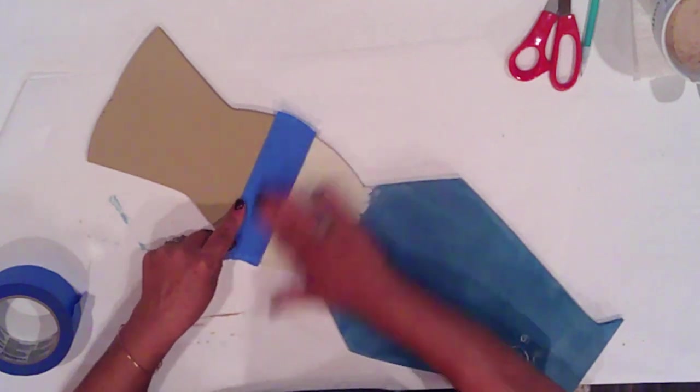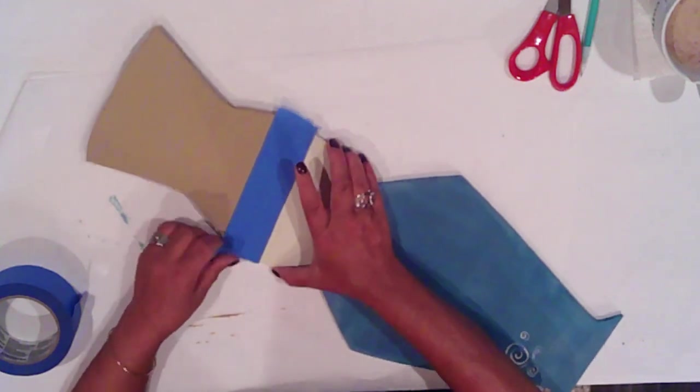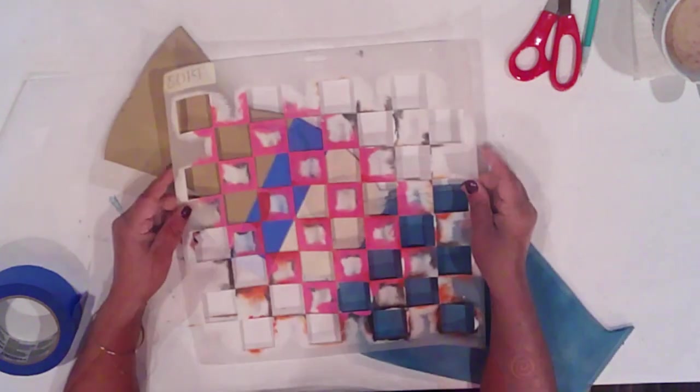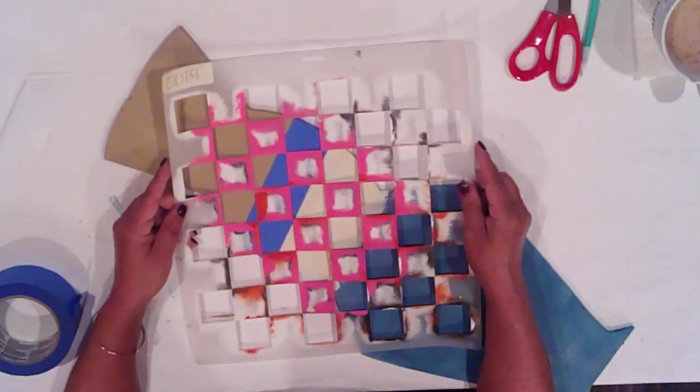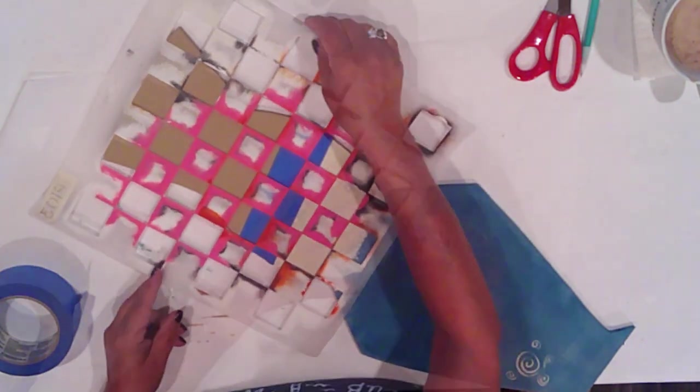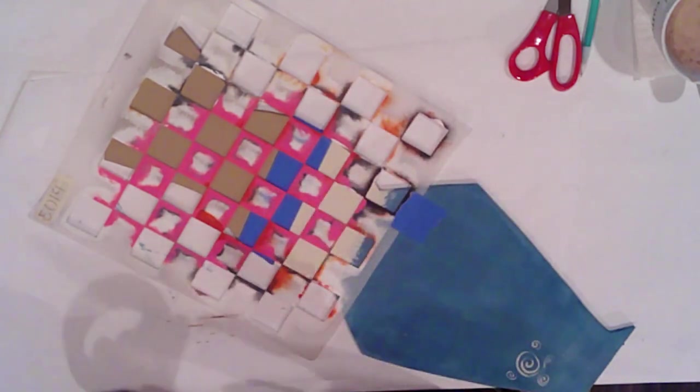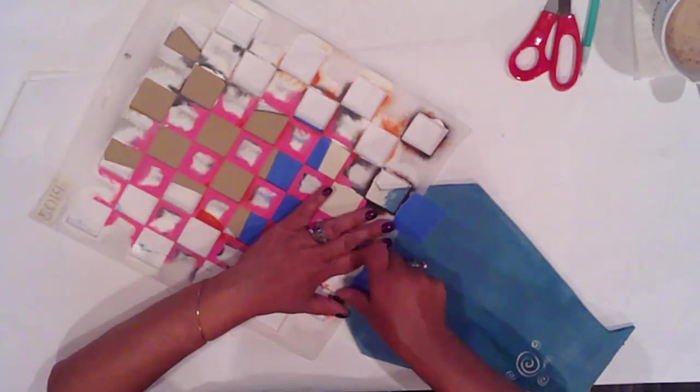I'm taping off the line between his hat and his face so I can use this stencil to add some checks to his hat. Once I get it lined up how I like it, I'll tape the stencil to the body so it doesn't shift while painting.